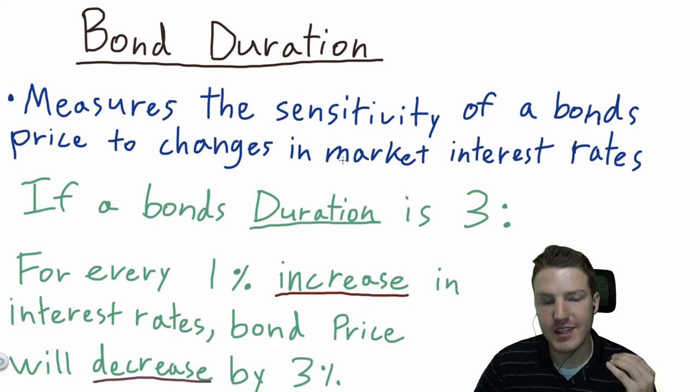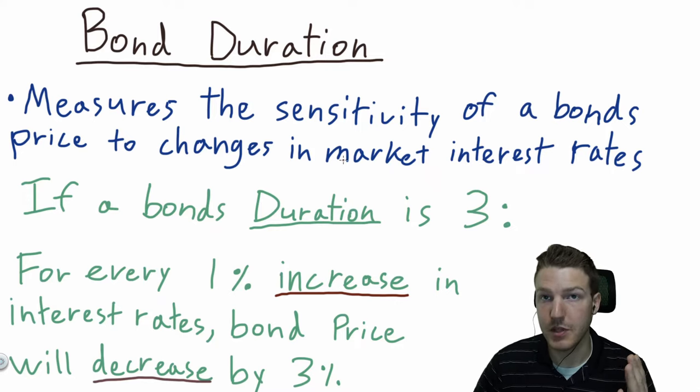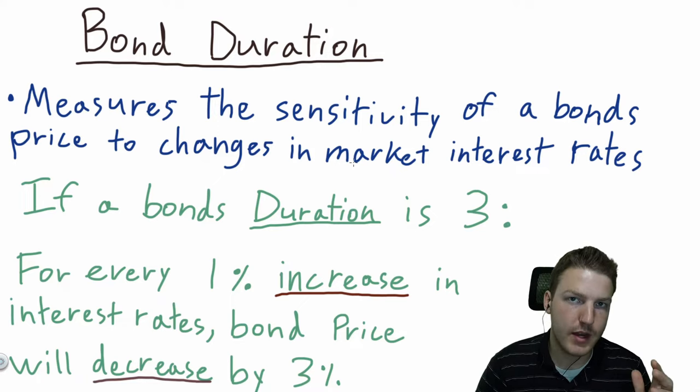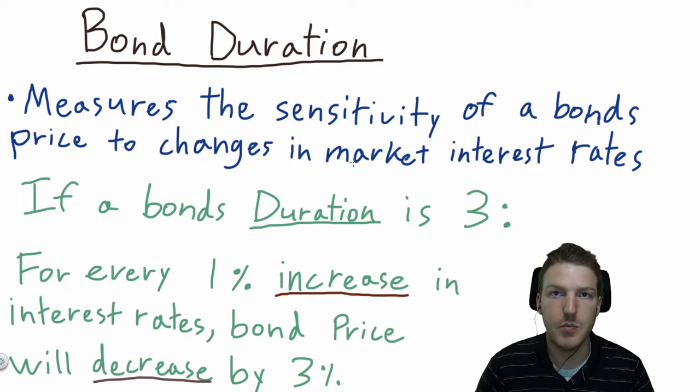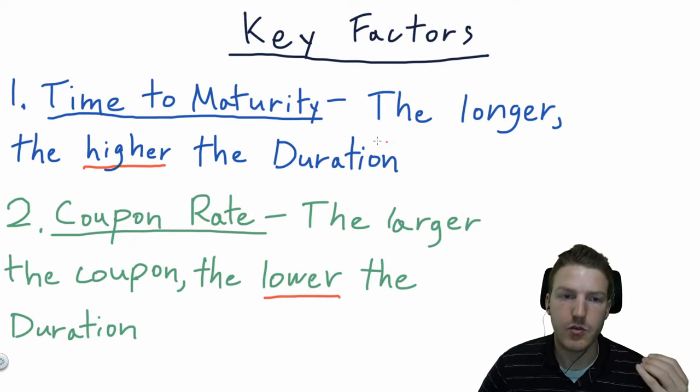So if a bond's duration is equal to 3, for every 1% increase in interest rates, the bond price will decrease approximately by 3%. It's an inverse relationship between interest rates and the price of the bond.